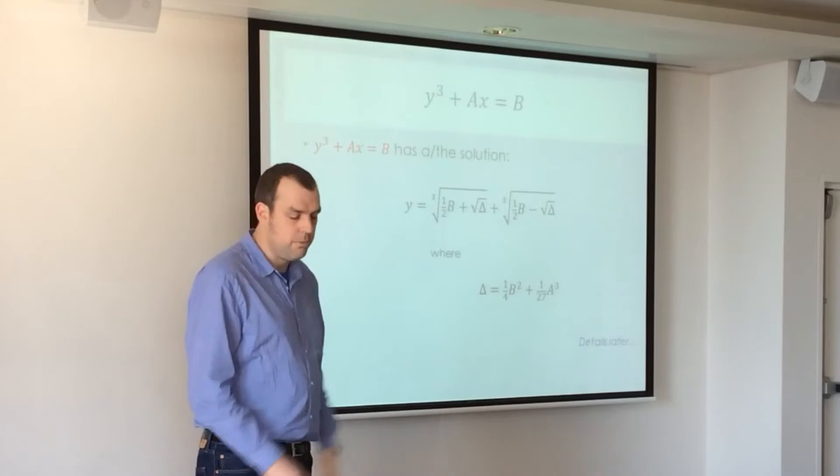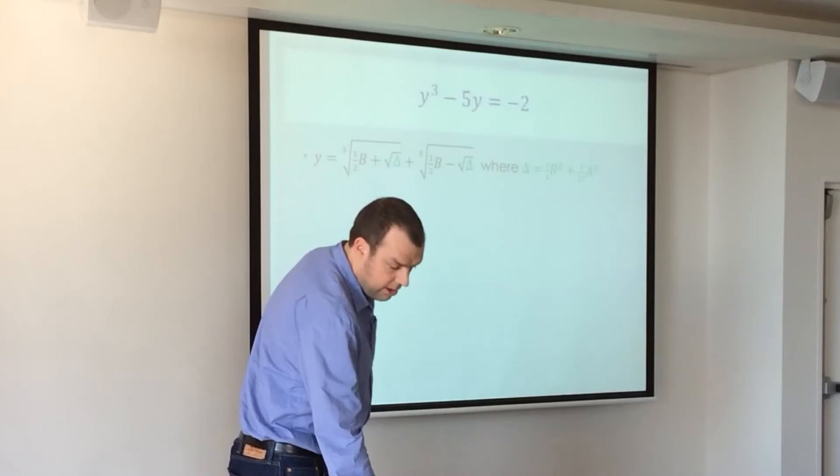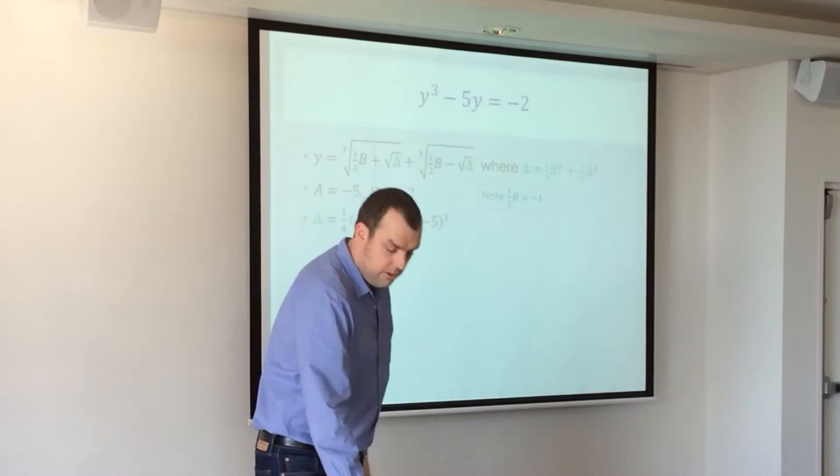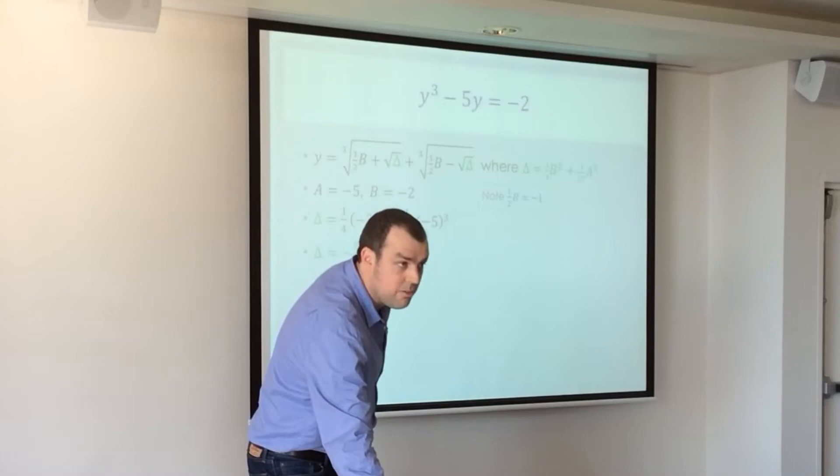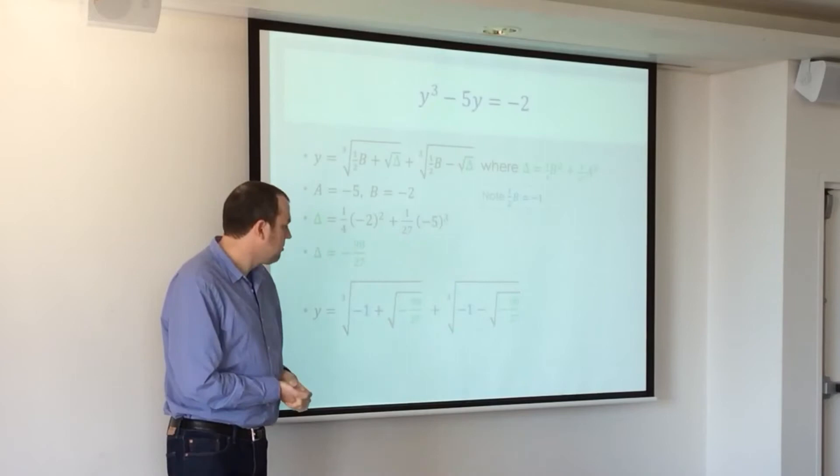Every cubic equation will have one real root, guaranteed, and then the other two will either be real or complex. Alright. So to apply that here, we're doing that equation, expanding this out. There's our values for a and b. Just note that half b is negative one, because we want half b here. Here's our expanding for delta. We get negative 98 over 27. Told you I made it so it would have nice numbers.